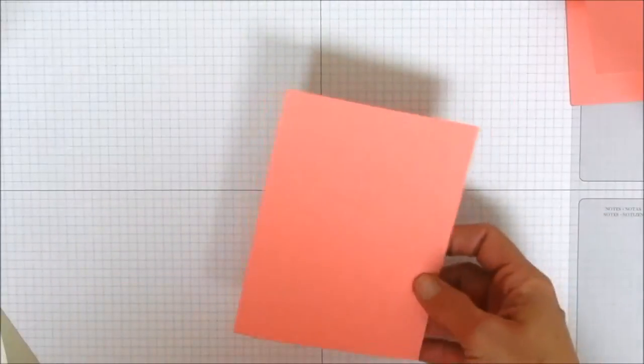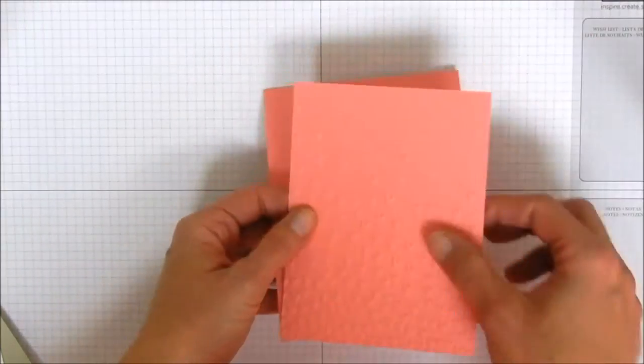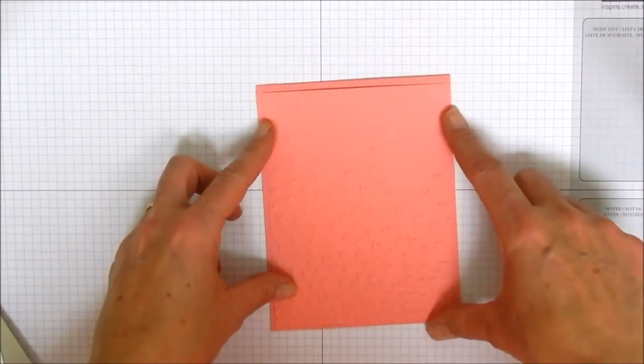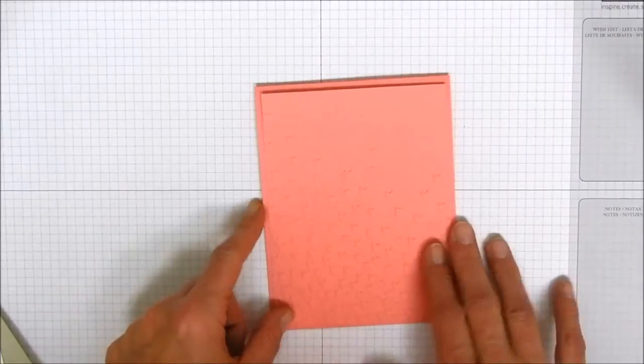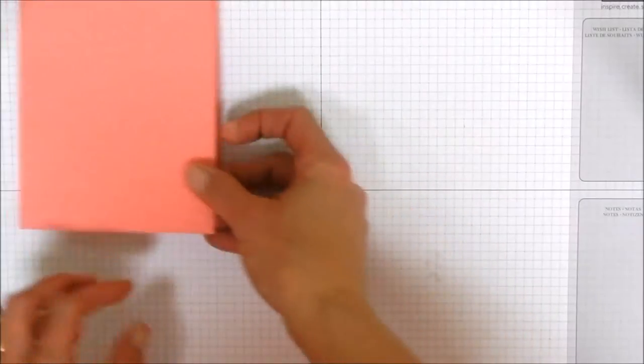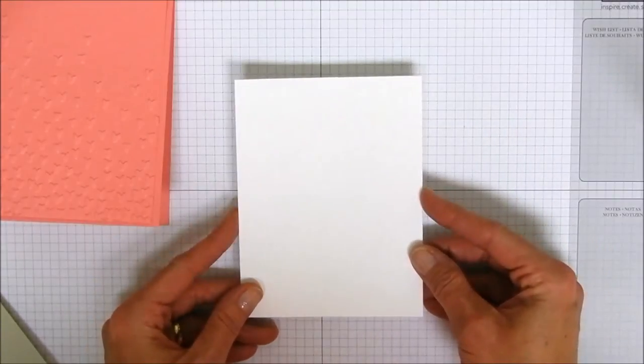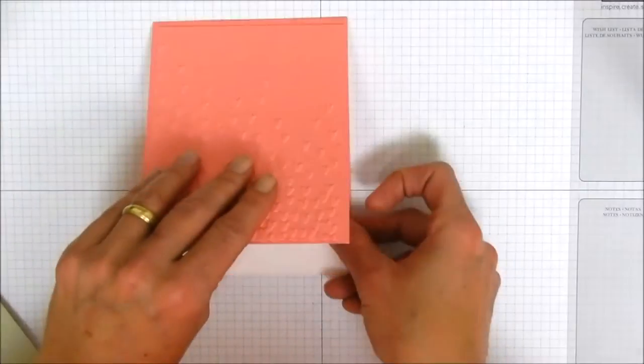That's going to be our layer on top of our card and I'm kind of a sucker for tone on tone layering. I just like the way that it looks. So that is those two layers and then we have a piece of whisper white cut to five and a quarter by four and that's going to be our inside.